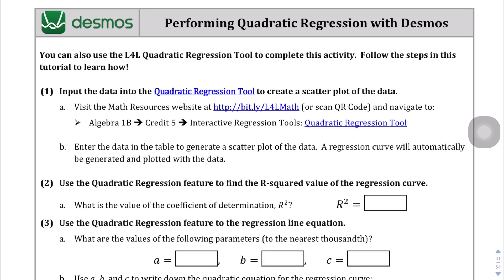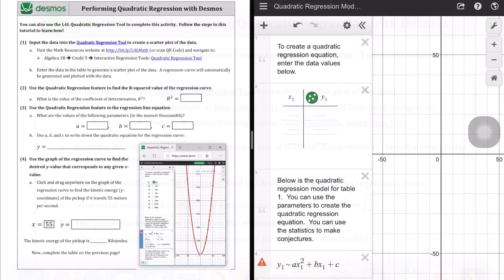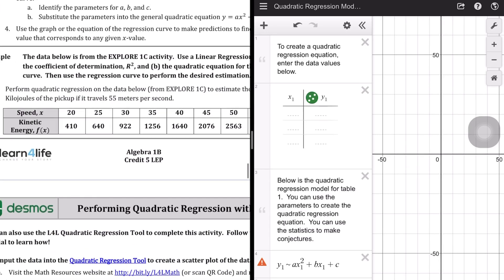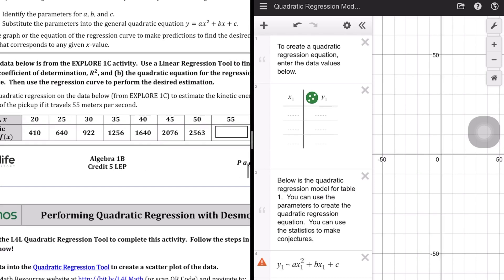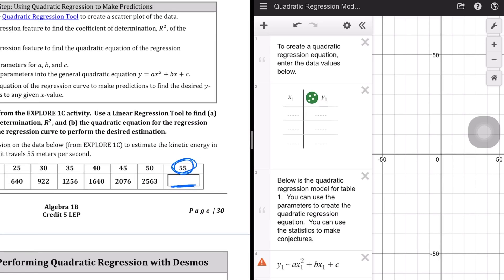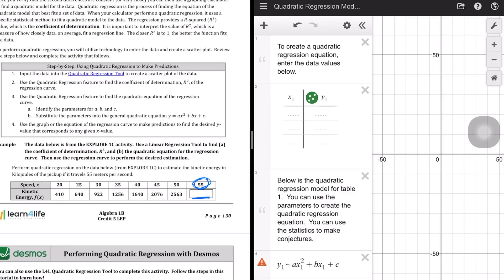If you want to follow along, feel free to do that. If you follow the link on page 31 to open up this quadratic regression model, the data you're going to get from the previous page on page 30. The basic idea is we want to predict what's going to happen when the x value is 55. That's the basic idea of what we're doing here. So let's go ahead and fill in these values of 20 and 410, 25 and 640 into Desmos over here on the right-hand side of the screen.